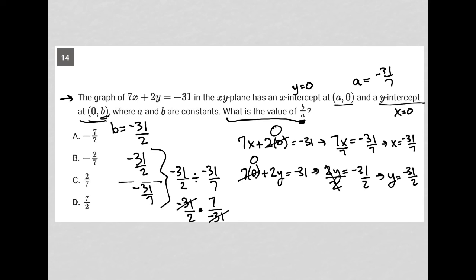I can cross cancel these, which now become positive ones. 1 times 7 is 7, 2 times 1 is 2. So therefore, 7 halves is the correct answer.